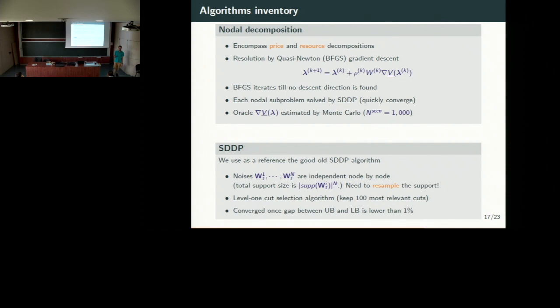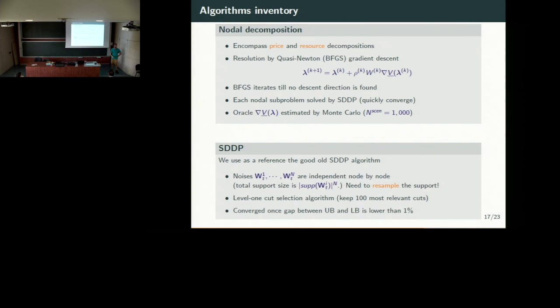How can we compute the price and resource decomposition? Both are similar to a gradient-like algorithm. Since the gradient algorithm is quite slow to converge, we will use BFGS — a second-order method — to find our optimal prices or resources. The update for the price looks like a standard BFGS step with W being the matrix that mimics the Hessian of the problem. We iterate until no descent direction is found and then the algorithm stops.